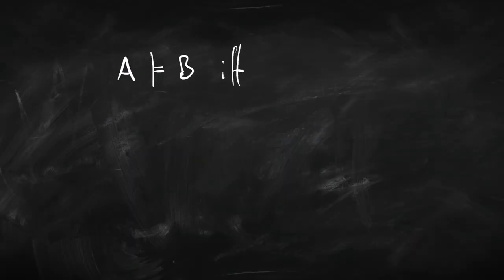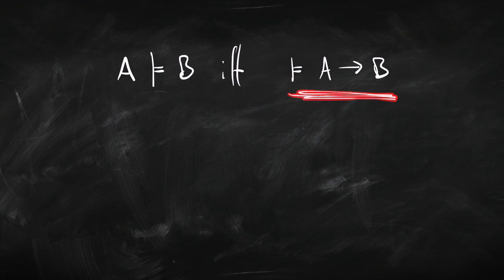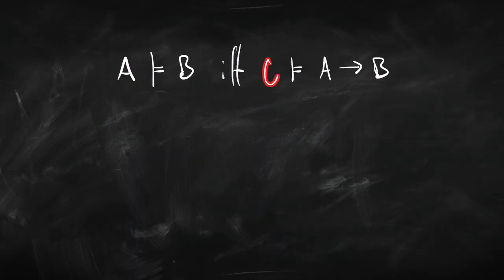So what is the deduction theorem? So in its most basic instance, the deduction theorem is a relationship between entailment here over on the left and validity over on the right. So we've got one premise and one conclusion, and we're saying that A entails B just in case the conditional from A to B, if A then B, is valid. Just remember that over here, that symbol's meaning entailment, and over here it's meaning validity, which is a kind of entailment. It's entailment with zero premises.